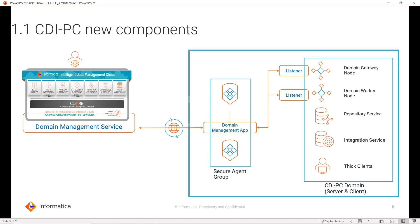Coming to the next part: when any client tries to connect in a cloud ecosystem, there must be a secure agent. Similarly here, there must be some process responsible for transmitting or communicating requests between the cloud and the CDI PC domain. So, we have the Domain Management App process, which will be running continuously on the secure agent machine. This is one of the new components — a service that runs as a process on the secure agent and is responsible for the communication.